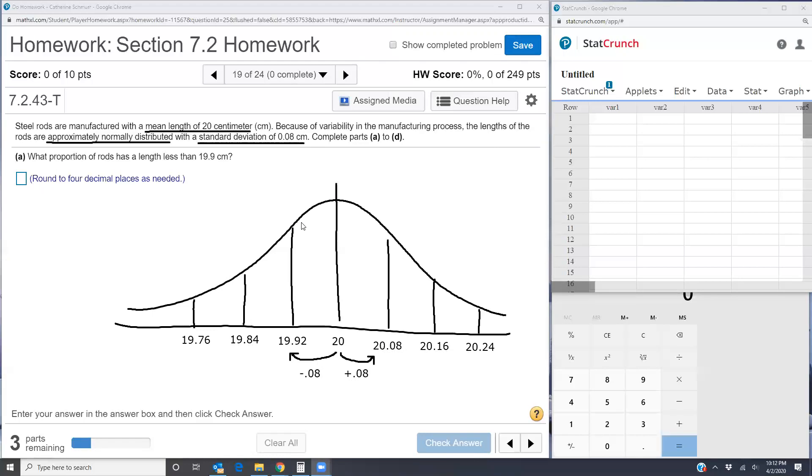Now that we know what our normal distribution looks like, we can start to answer questions about the proportions or probabilities. Part A says what proportion of rods has a length less than 19.9?